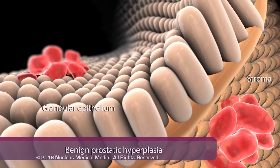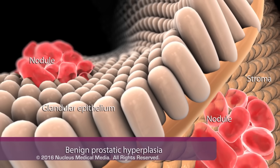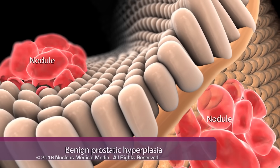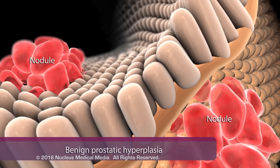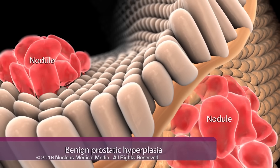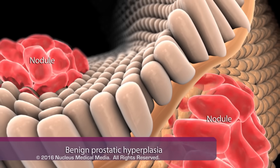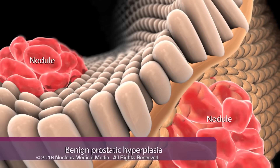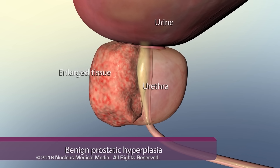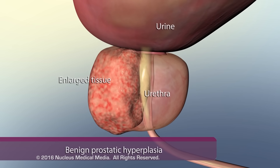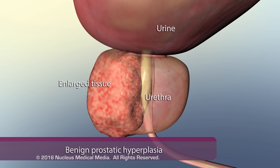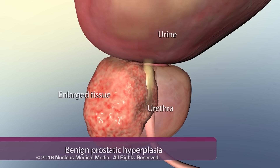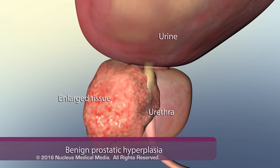In benign prostatic hyperplasia, the glandular epithelium and stroma proliferate in the transition zone and form nodules that expand the tissue. Over time, the enlarged tissue compresses the urethra and prevents normal urination.